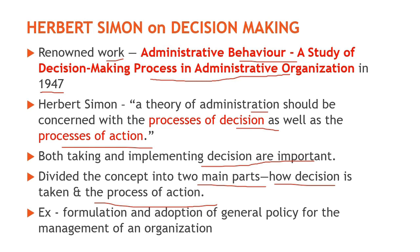Iska example hai formulation and adoption of general policy for the management of an organization. Jab organization ki management ke liye ek policy banai jati hai, formulate ki jati hai — woh pehla part hota hai decision making ka. Aur jab us policy ko adopt kar liya jata hai, implement kar liya jata hai — woh hota hai second part of decision making. So decision making for Herbert Simon consisted of how decision is taken and it also included the process of action.